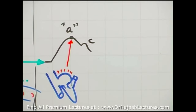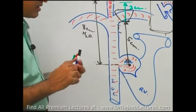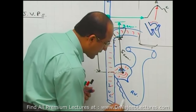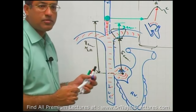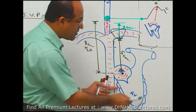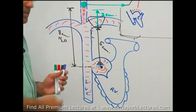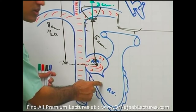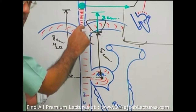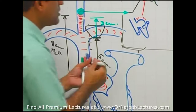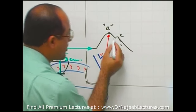With the valve now closed and the ventricle contracting, the atria keeps on relaxing, and the tricuspid valve is pulled downward, accommodating more blood. Due to this, the blood column keeps on falling and pressure keeps on falling. This descent is called the X descent. The X descent is caused by continued atrial relaxation while the tricuspid valve remains closed during ventricular systole.